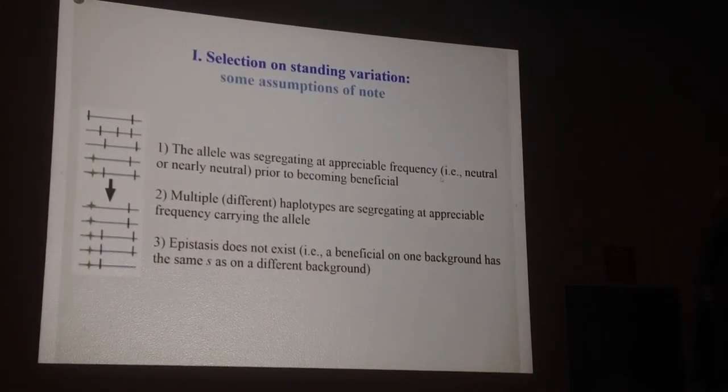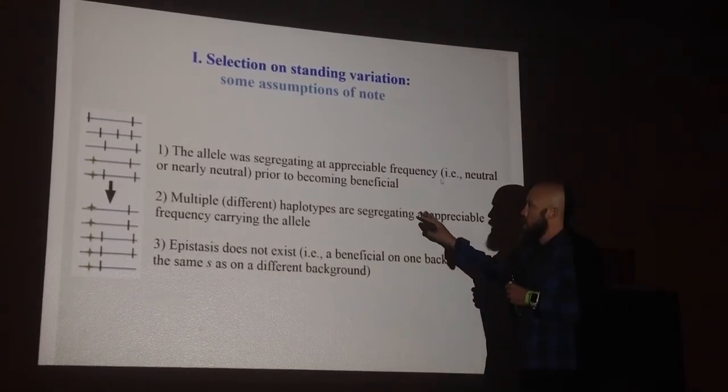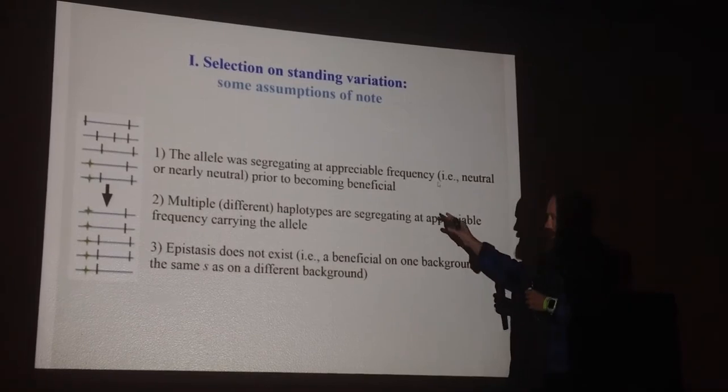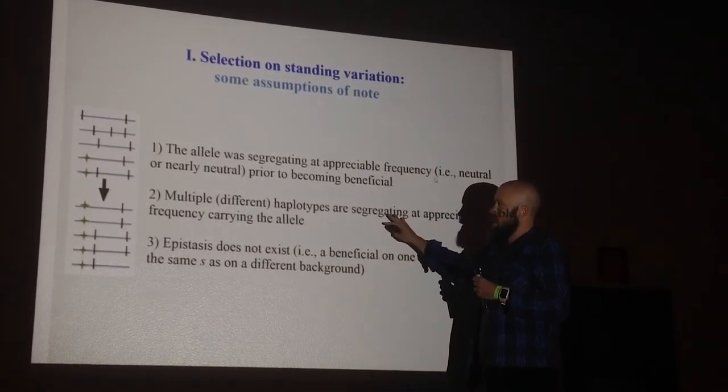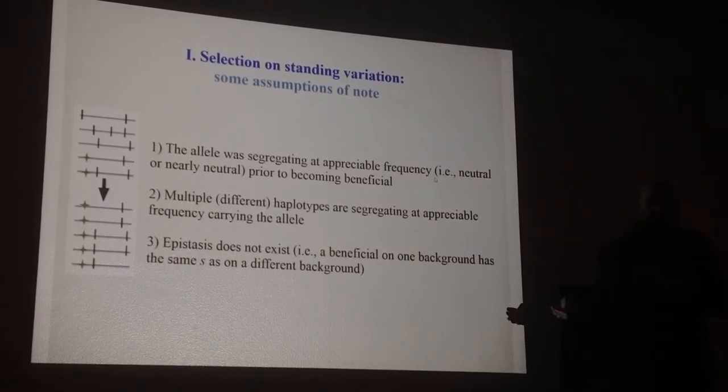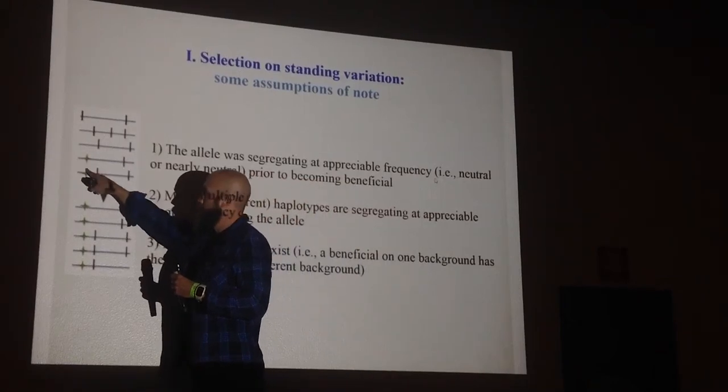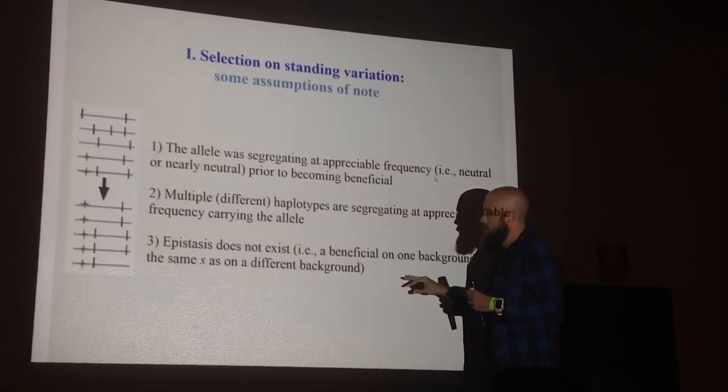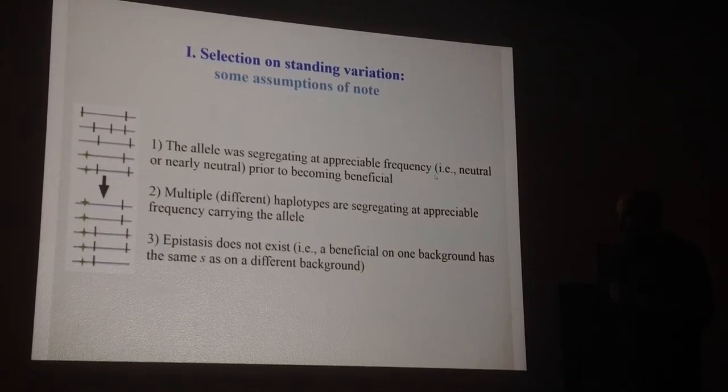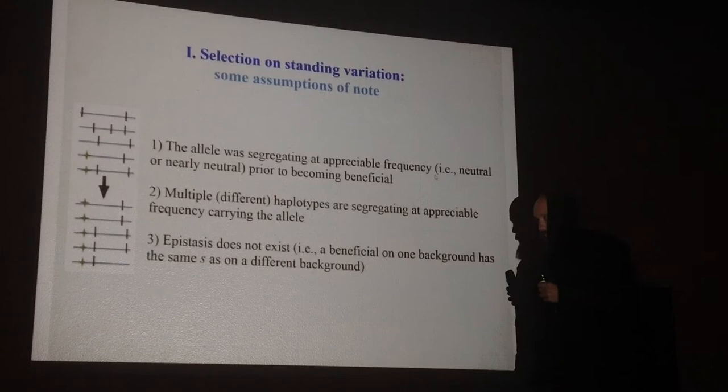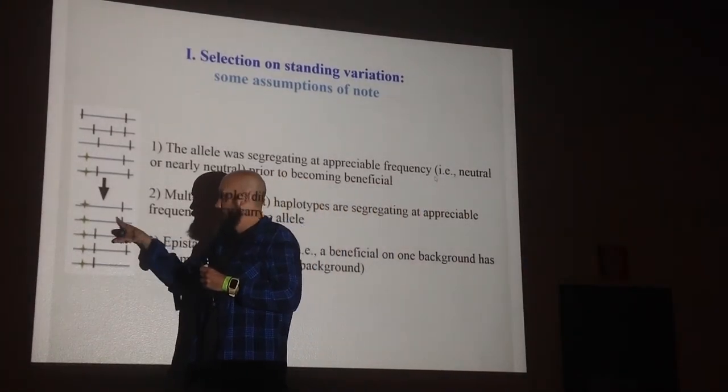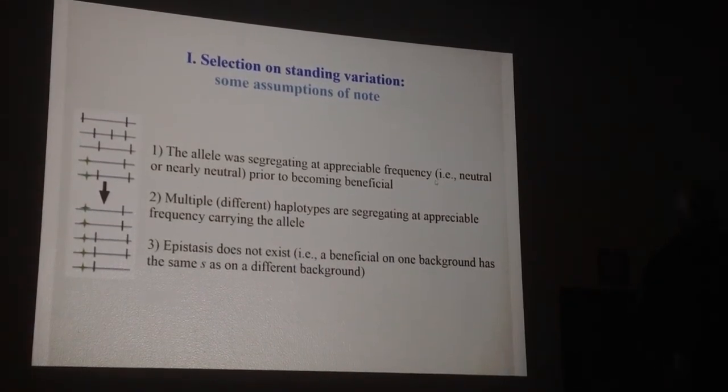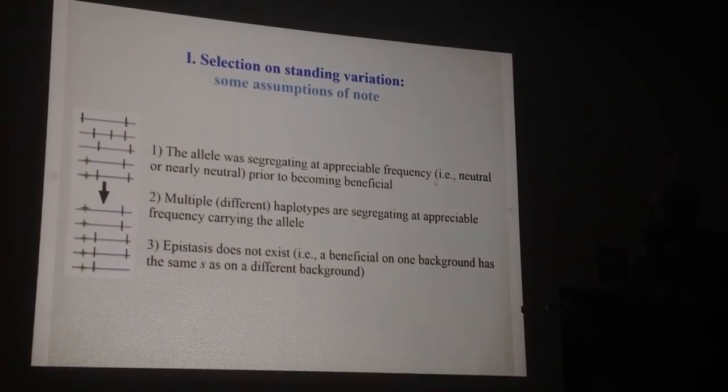Today I'm going to briefly touch on two that I think are most common: selection on standing variation and selection on multiple beneficials. Let's start with a few thoughts on selection on standing variation, a few assumptions of note. One, the allele was segregating at appreciable frequency, neutral or nearly neutral, prior to becoming beneficial. That's key by definition for this model. The second is multiple different haplotypes were segregating at appreciable frequency carrying this allele. We need both this guy segregating and different haplotypes segregating carrying this beneficial. If it's on the same haplotype, it just looks like a hard sweep. And three, which might be contentious but I think is clear, is assuming epistasis doesn't exist. In other words, the beneficial mutations sitting on this haplotype and this haplotype are selectively equivalent. There's no selection differential. That's a hard biological pill to swallow, but it is what it is.